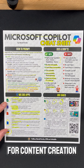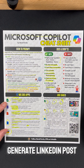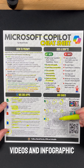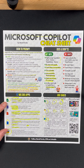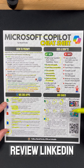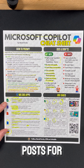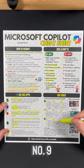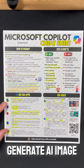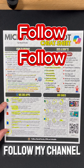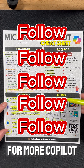For content creation — Number 7: generate LinkedIn post, video, and infographic ideas. Number 8: review LinkedIn posts for a better hook and story. Number 9: generate an AI image of you in a professional context. Follow my channel for more Copilot tips.